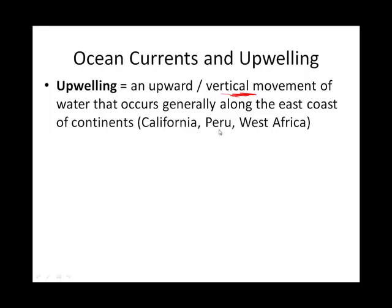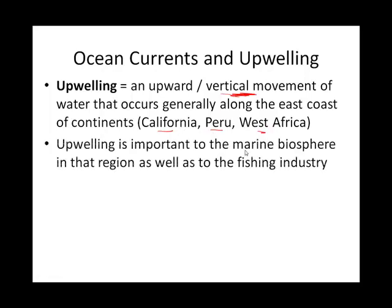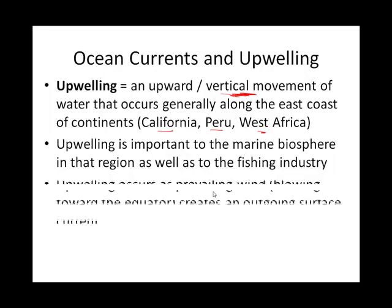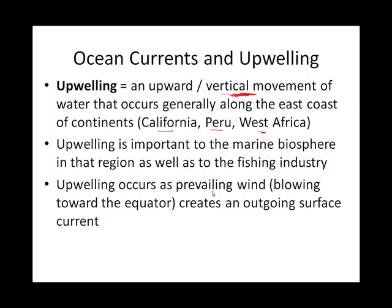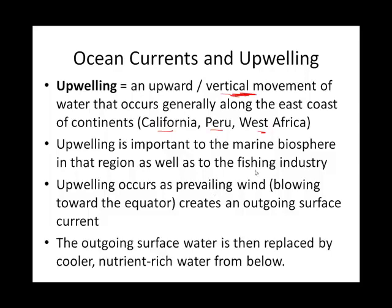The Peruvian current off South America, the California current off North America's west coast, and a similar current off West Africa — people living along these coasts count on this upwelling. It's an ongoing, important phenomenon along coasts where cold water moves from the poles toward the equator, creating an upwelling of colder, nutrient-rich water from the deep. We're counting on upwelling being in place.